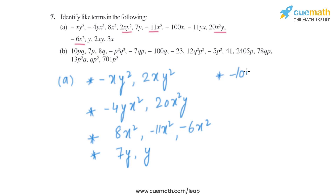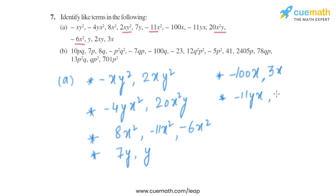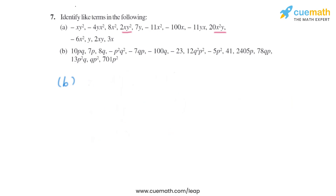The next term is minus 100X. The variable is X and the power is 1, so its like term is 3X, as they both have the same variable and same power. Then, minus 11YX has variables Y and X, so its like term is 2XY — they both have the same variable and same power, so minus 11YX and 2XY are like terms.